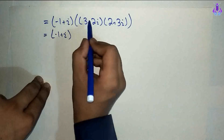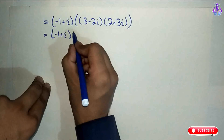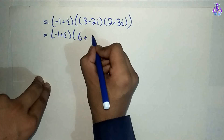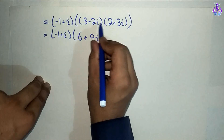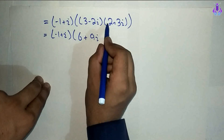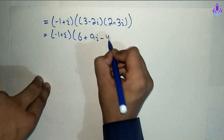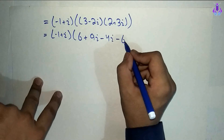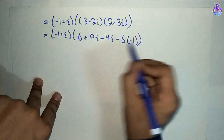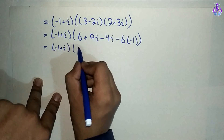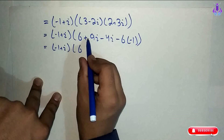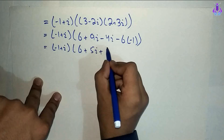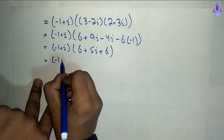Minus 1 plus iota. Inner bracket: (3 minus 2 iota)(2 plus 3 iota). 3 multiply 2 equals 6, 3 multiply 3 equals plus 9 iota. Minus 2 iota multiply 2 equals minus 4 iota. Minus 2 iota multiply 3 iota equals minus 6 iota squared. Iota squared ki value minus 1, so minus 6 times minus 1 equals plus 6. Combining: real parts 6 plus 6 equals 12. Imaginary: 9 iota minus 4 iota equals 5 iota. So inner bracket equals 12 plus 5 iota.